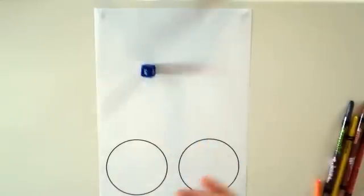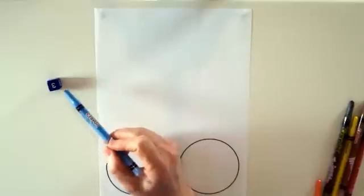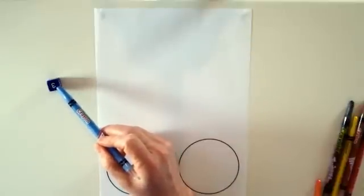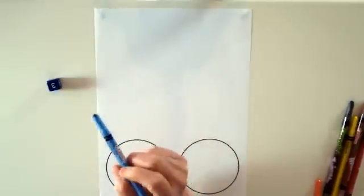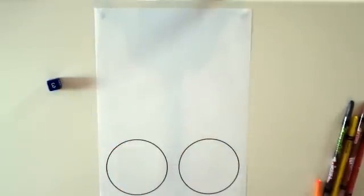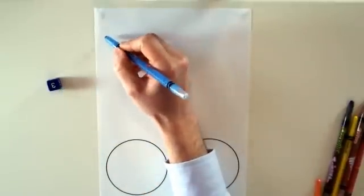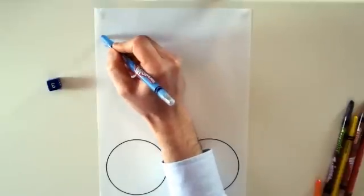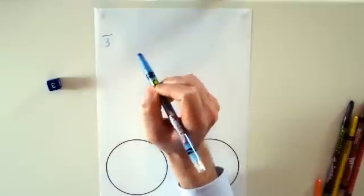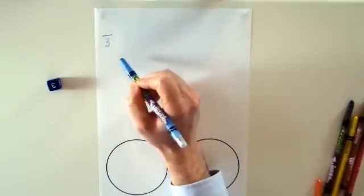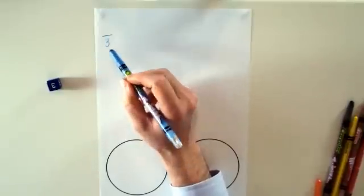Players take turns rolling the die. So blue has just rolled a three. Once a player rolls the die, they need to decide whether they're going to make the number into a numerator or a denominator. So blue's going to make three into the denominator. They write the three and they have to do the line to show whether it's a numerator or a denominator. So they can't just draw a three and then decide whether it's going to be a numerator or a denominator later.